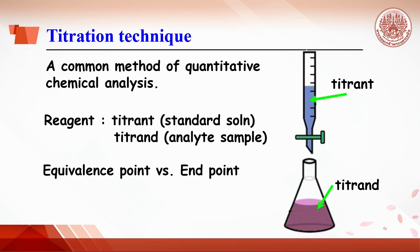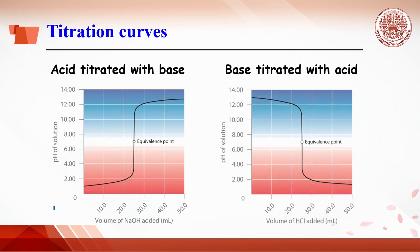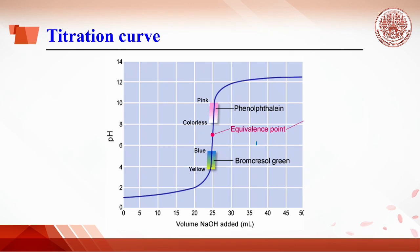The equivalence point is an ideal point for the completion of titration. The end point of the titration is displayed by a change in indicator color. Hence, the end point and the equivalence point will be precise and accurate if the right indicator is used. Look at the titration curve, which might be a strong acid titrated with a base, or a strong base titrated with a strong acid. The equivalence point is shown at pH 7. So, if bromocresol green or phenolphthalein are used, the color changes at a pH very close to the equivalence point, meaning these two indicators are good for strong acid and strong base titration.